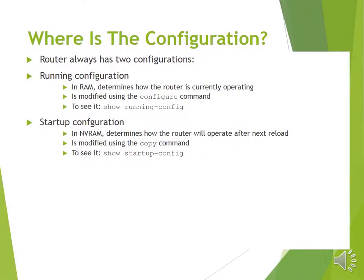A router always has two configurations: running configuration and startup configuration. The running configuration is stored in RAM and determines how the router is currently operating. It is modified using the 'configure' command and viewed with 'show running-config'. The startup configuration is stored in NVRAM, determines how the router will operate after the next reload, is modified using the 'copy' command, and is viewed with 'show startup-config'.